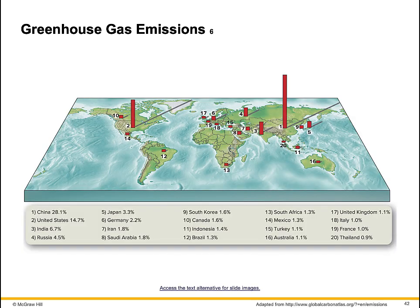Where are the most greenhouse gases concentrated? Initially, they are concentrated where there is more human activity. Four countries produce more than one half of global emissions: China, the U.S., India, and Russia. However, atmospheric circulation patterns thoroughly mix the gases and distribute them throughout the troposphere, so greenhouse gas concentrations are remarkably uniform worldwide.